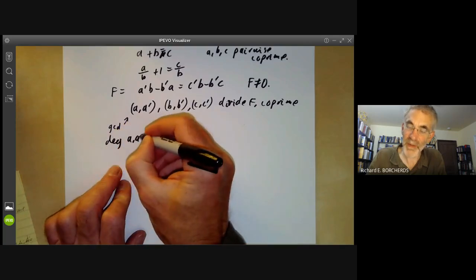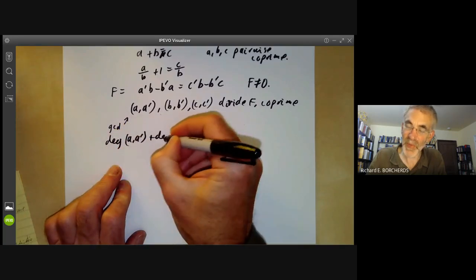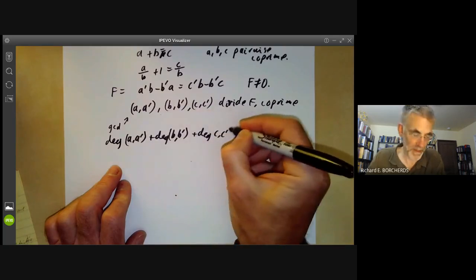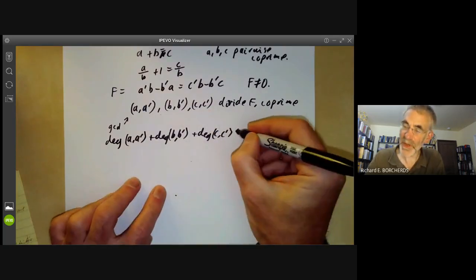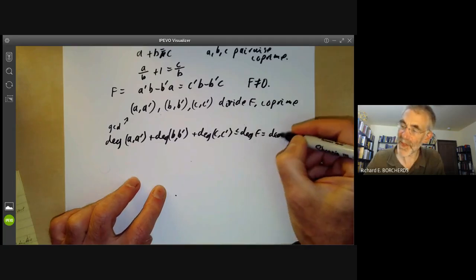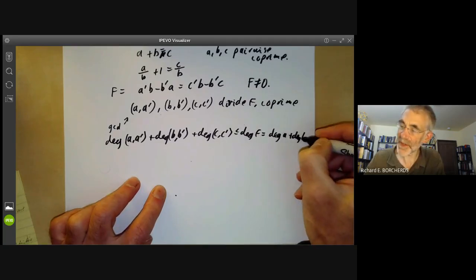we see the degree of (A, A prime) plus the degree of (B, B prime) plus the degree of (C, C prime), is less than equal to the degree of F, which is the degree of A plus the degree of B minus one.